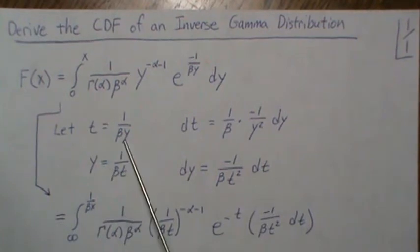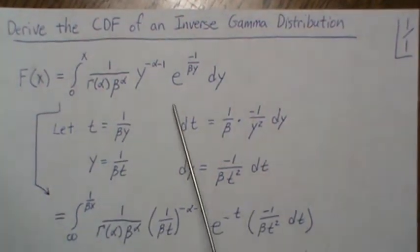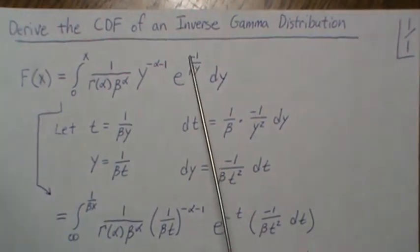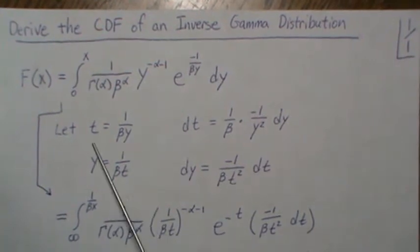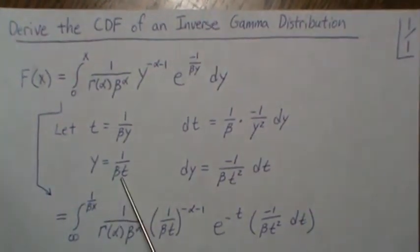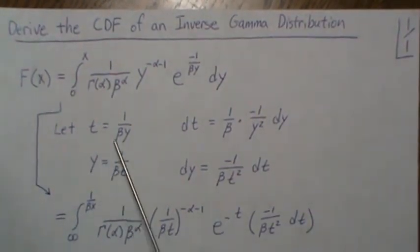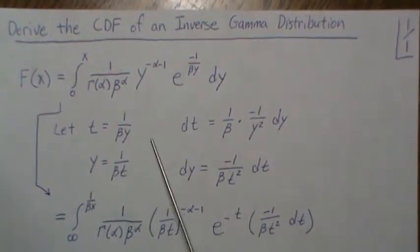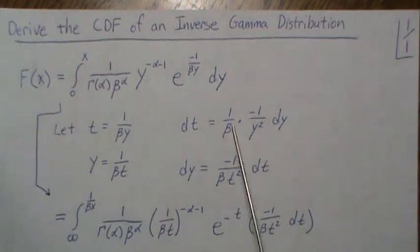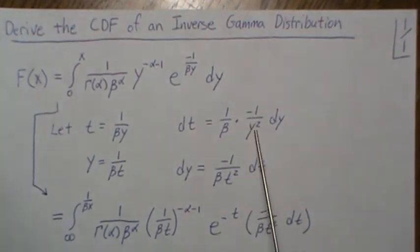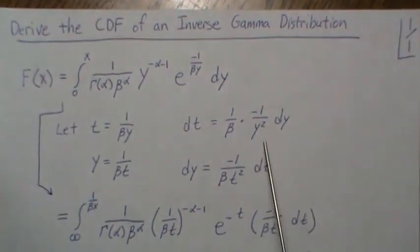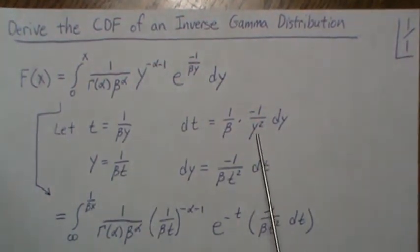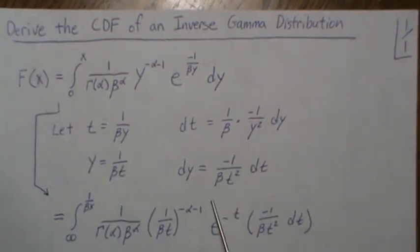Here we'll let T equal 1 over beta Y, which is this exponent minus the negative, and then when you back solve for Y you get this. Now if we take the derivative of both sides, derivative of T, and this is the derivative of Y, you get 1 over beta minus 1 over Y squared dy. And then you plug in Y for here, and you get this piece here.